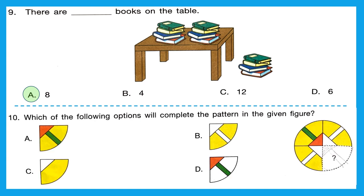Question 10: 'Which of the following options will complete the pattern in the given figure?' We have a circle with a pattern. Looking at option A — if we fit it, it completes the picture because the diagonally opposite piece looks exactly like the mirror image of option A. The right option is option A.